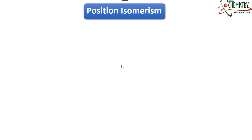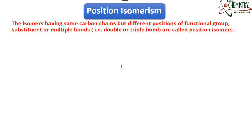Now let's talk about position isomerism. The definition: isomers having the same carbon chain but different positions of the functional group, substituent, or multiple bonds — meaning double bond or triple bond — are called position isomers. Remember, the carbon chain does not change; only the position of the functional group, substituent, or multiple bonds is different.